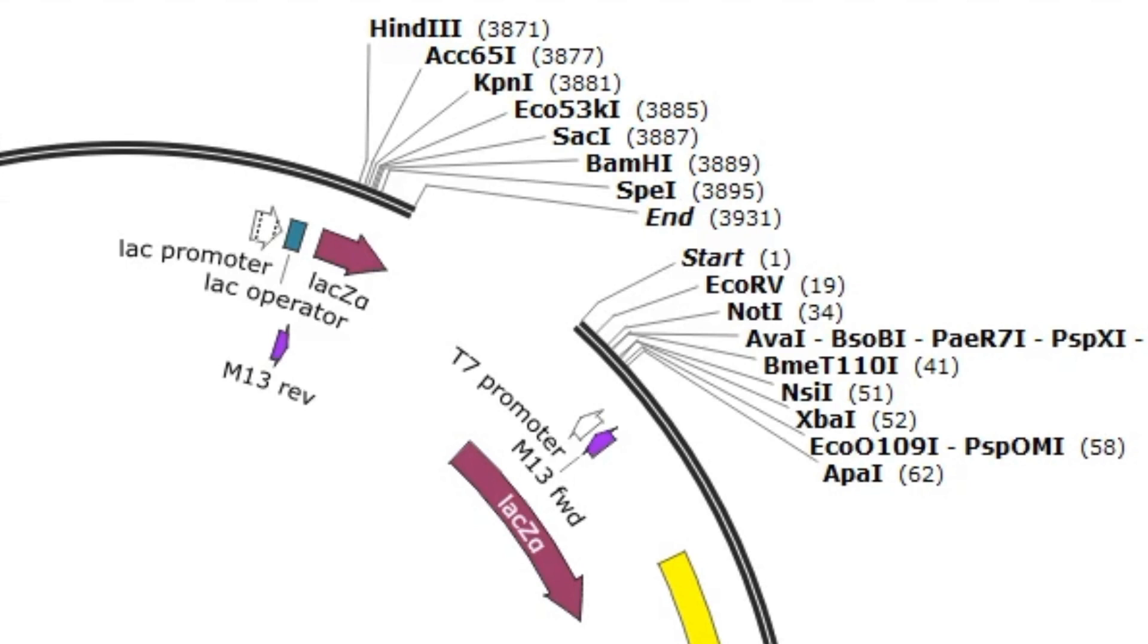A couple of key points about topo-cloning. Topoisomerase is poised to complete one catalytic event. It can only complete this event when its binding site is filled with substrate, including the insert. Thus, there is typically little to zero background when topo-cloning.